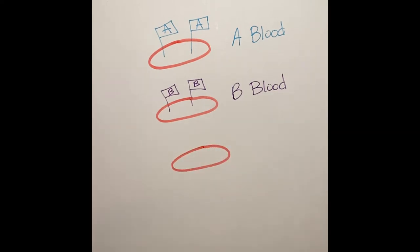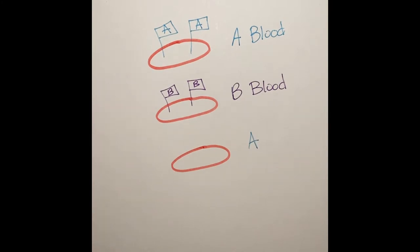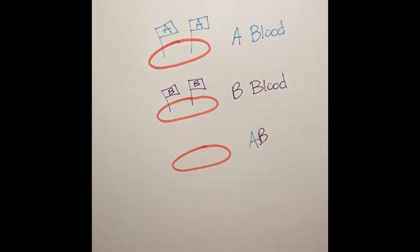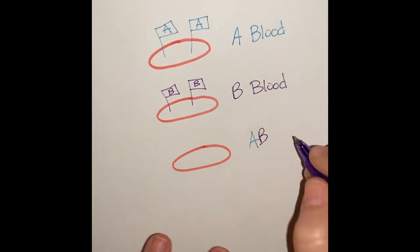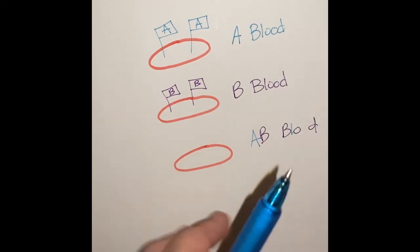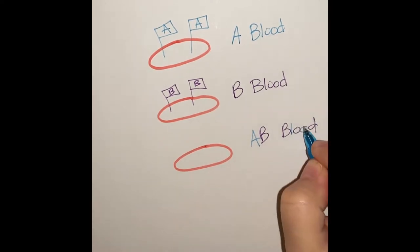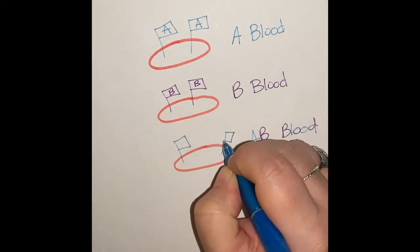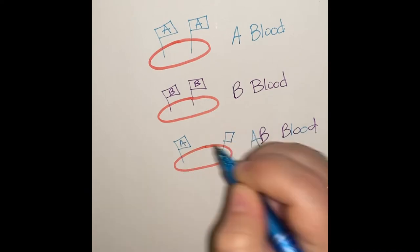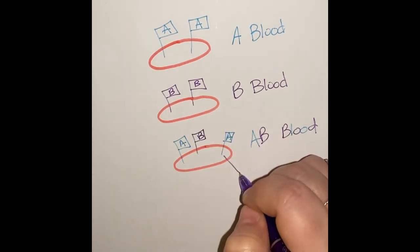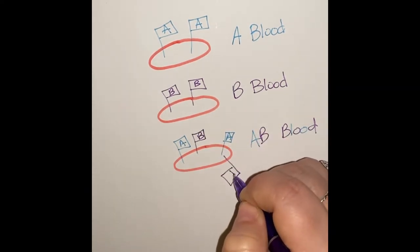If you are blood type AB, remember, you have A and B antigens. There's no such thing as an AB antigen. So there's the A flags, A antigens, and then the B flags, B antigens.